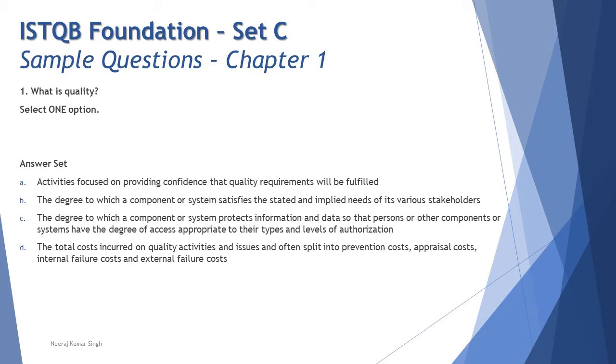Let's confirm with C and D. C says the degree to which a component or system protects information and data so that persons or other components or systems have the degree of access appropriate to their types and levels of authorization. I would like to say that they just tried complicating you by using a longer statement. The point is they're saying protecting the information and levels of authorization. These words clearly state that we're talking about security.